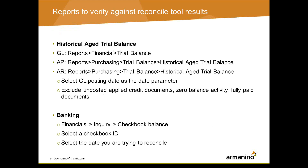Your true reconcile should be between the RM or PM historical age trial balance and the GL trial balance reports. If both of these match, you will not necessarily need to run the Reconcile to GL tool for that month. Below are the steps for how to run the historical age trial balance for AP, AR, and GL. For GL, focus on the date range and selecting the correct account. For AP and AR, make sure you're selecting the correct GL posting date and excluding unposted applied credit documents, zero balance activity, and fully paid documents. Last month we also covered bank reconciliation, so check out that previous webinar.